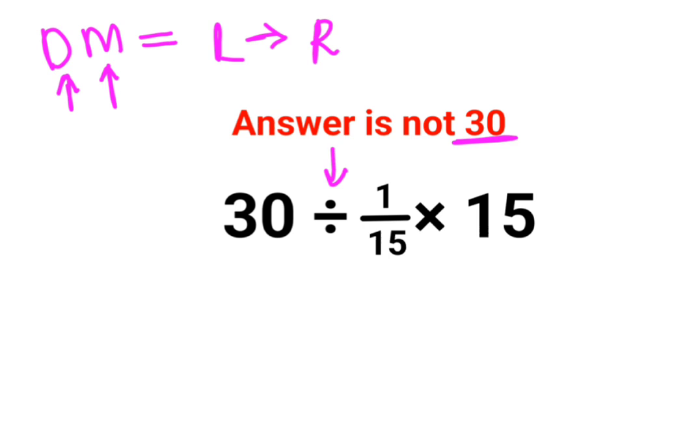So first we will do 30 divided by 1/15. Whenever you have division, you will follow the rule of KCF where K stands for keeping the first number as it is.